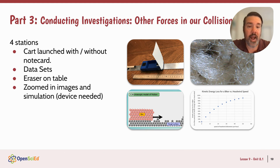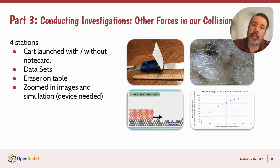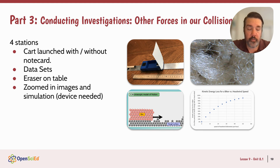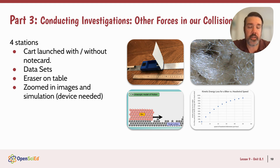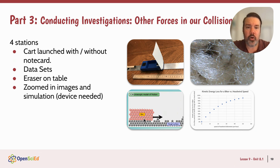Station two, we look at some data sets — graphs of relationships between energy and wind. Station three, we take an eraser and rub it on the table and measure the temperature of the eraser and the table before and after. Station four is where we see zoomed-in images — carpet, different surfaces — and then observe a simulation of a box sliding over a rough surface and watch what happens with those particles. So we're really collecting a lot of evidence about what's going on with friction and air resistance.